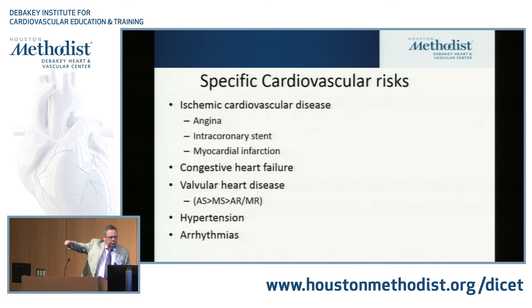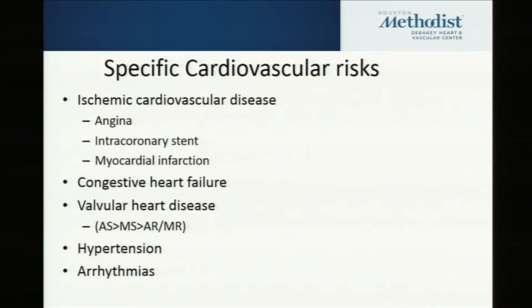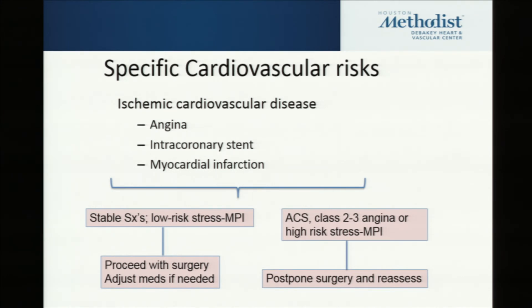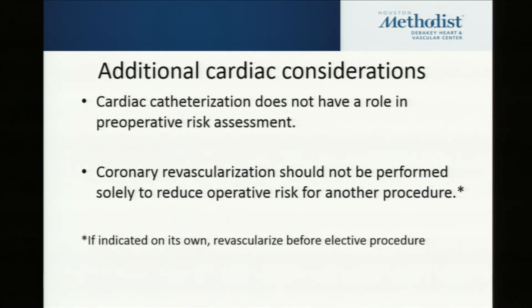For ischemic heart disease: if a patient is completely stable, had an MI a year ago but is perfectly stable with a low-risk nuclear study from six months ago, that's good enough — you can go ahead and clear them. If they meet the higher-risk criteria and fail the nuclear stress, you pause and get cardiologist input. If they have acute symptoms, class 2 or 3 angina, or a perfusion defect of 30% or more, you postpone surgery and reassess. Cardiac cath has no role unless it's being done for symptoms — as a pre-op checkup alone, it is not indicated.